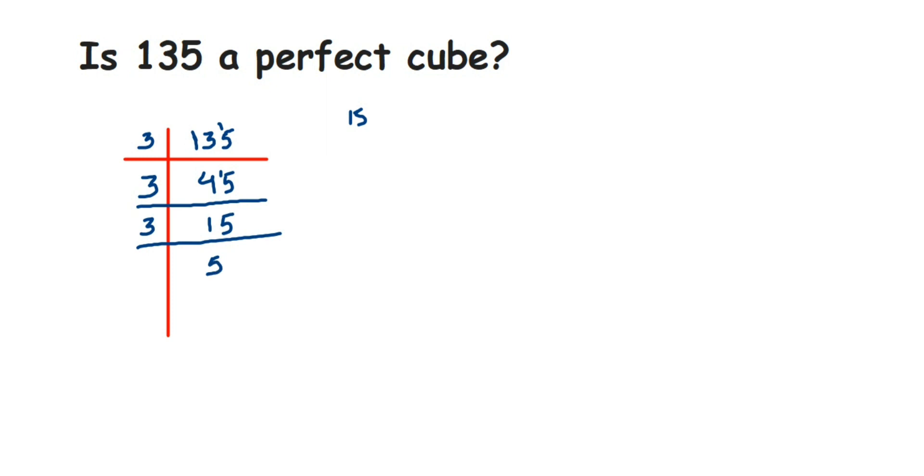It goes in 3 tables. 3 fives is 15. Next we have 5. 5 is a prime number. So 5 ones is 5.